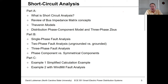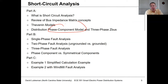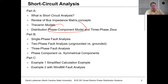Since we're working on distribution circuits, and since these circuits are unbalanced and we don't have three phases at every bus, we have to look at a more generalized model — what I'll call a phase component model — and discuss how we can create a three-phase Z-bus from this, which is what we need for fault analysis. In part two, I'll cover different fault types: single phase, two phase, and three phase faults. Then I'll make some comments about phase components versus symmetrical components, and in part C, go through worked examples.